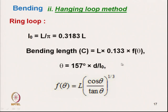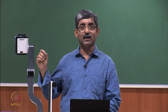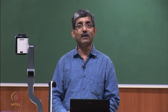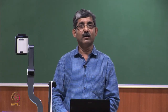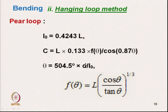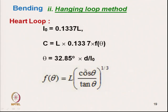For the ring loop, θ = 157 × (D/L0), so knowing the deflection we can calculate the bending length. Similarly, for the pure loop if we know the deflection only, the function of θ is the same and we can calculate the bending length. The same approach applies for the heart loop using the corresponding formula.